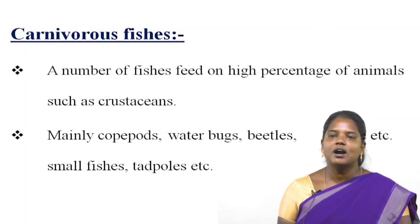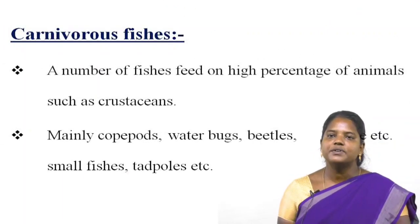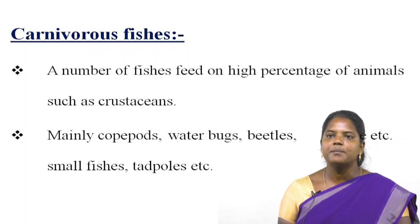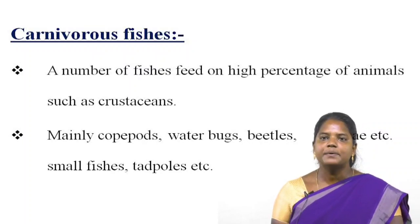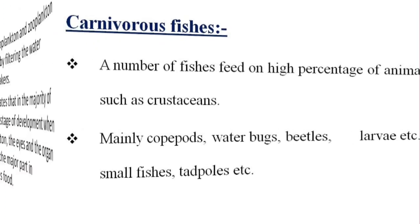What is meant by carnivorous feeding habit of fishes? A number of fishes feed on a high percentage of animals such as crustaceans, mainly copepods, water bugs, beetles, and larvae, etc.